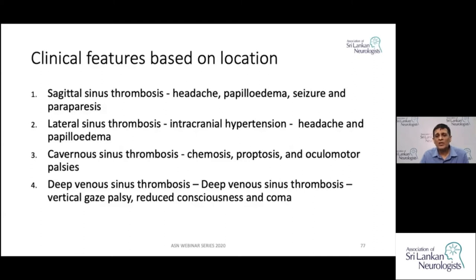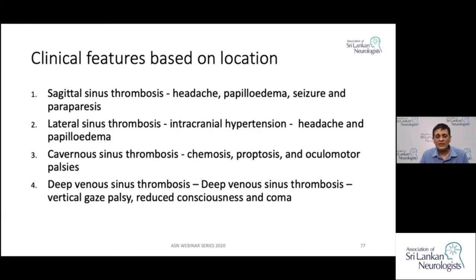Presentation varies depending on which sinus or vein is involved. Superior sagittal sinus thrombosis presents with headaches, papilledema, seizures, and paraparesis. Lateral sinus thrombosis may present only with raised intracranial pressure — headache and papilledema. Cavernous sinus thrombosis presents differently with eye signs: chemosis, proptosis, and oculomotor palsies. Deep venous sinus thrombosis can cause vertical gaze palsy and reduced level of consciousness or coma.